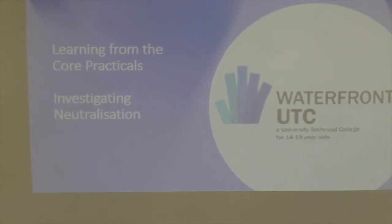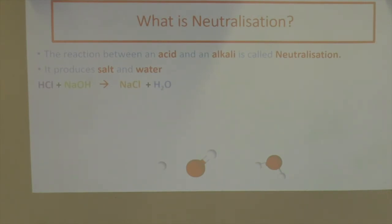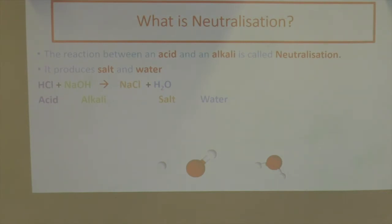Welcome back to learning from the core practicals. In this experiment we will be investigating neutralization, but let's look at the theory first before we do the experiment. The reaction between an acid and an alkali is called neutralization. It produces salt and water. Here's an example: HCl (hydrochloric acid) plus NaOH (sodium hydroxide) reacts to form NaCl (sodium chloride) plus H2O (water).